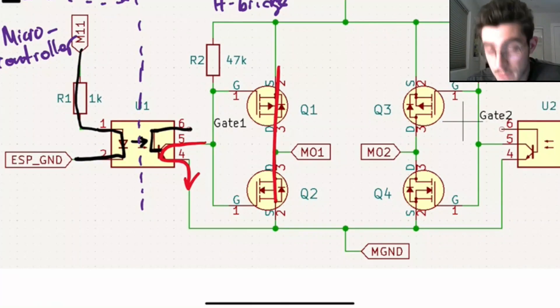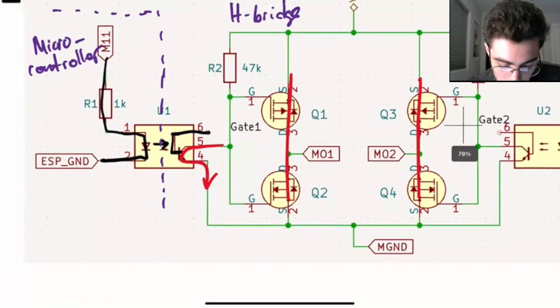I just mentioned that it's possible to short your circuit. And that's if you turn on Q1 and Q2 at the same time or if you turn on Q3 and Q4 at the same time. So you're going to want to avoid doing that or you're probably going to destroy your MOSFETs.